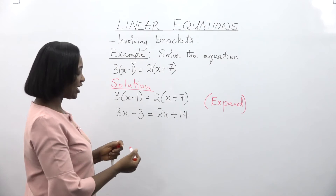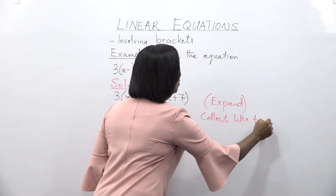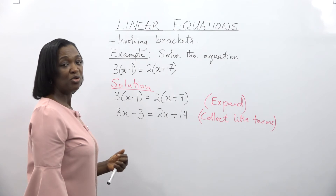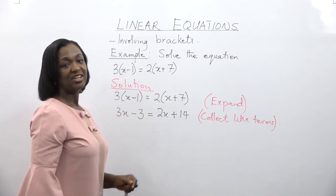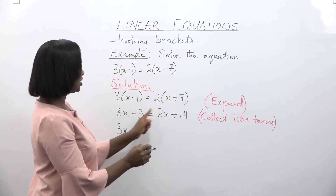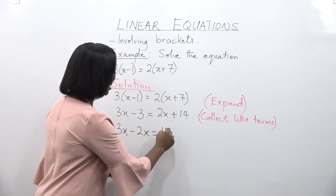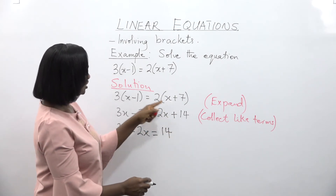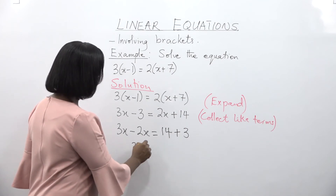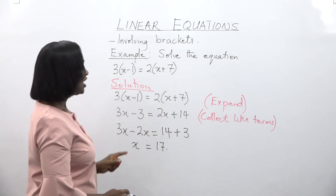After expanding, the next step is to collect like terms. We group 3x and 2x on the left hand side, and group 14 and 3 on the right hand side. So 2x crosses the equality — it's positive, so it becomes negative. So 3x minus 2x is equal to 14. Negative 3 crosses the equality and becomes positive 3. So 3x minus 2x is equal to x, and 14 plus 3 is equal to 17. So the value of x in this equation is 17.